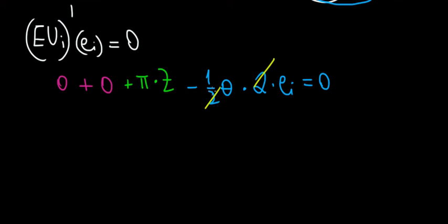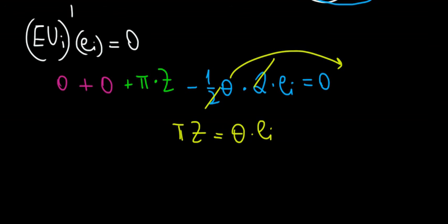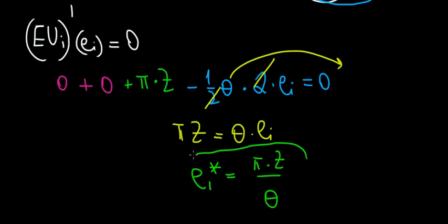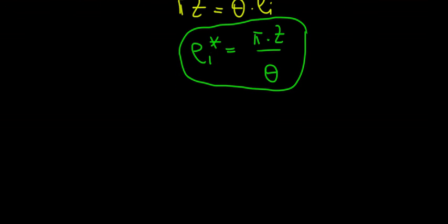Solving, the optimal effort level is e_i equals pi times Z divided by theta. The interpretation: if pi increases — meaning effort matters more for getting the bonus — workers put in more effort. If Z, the bonus, goes up, that also incentivizes more effort. If theta, the cost of effort, goes up, effort becomes more costly so the effort level decreases. In the next video we go to part B.